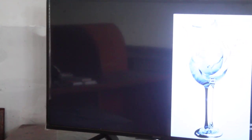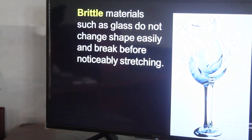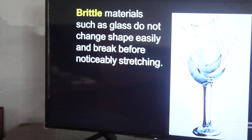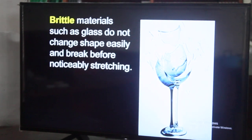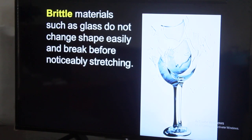Force can cause the change of shape. It can cause a wine glass to break into pieces when applied to it, because the wine glass has a property which is known as brittle. Brittle refers to substances which, when force is applied to them, don't change shape but completely break into small pieces.